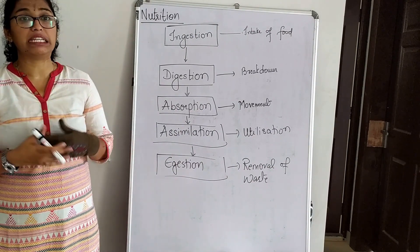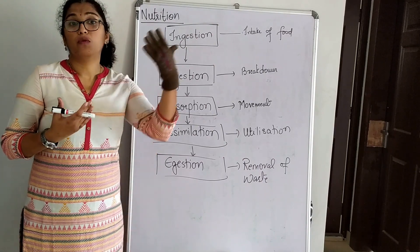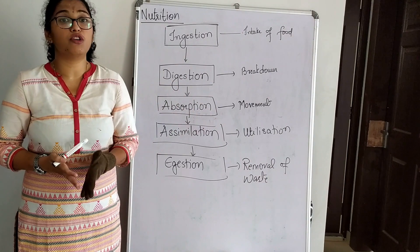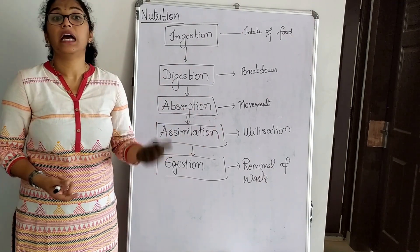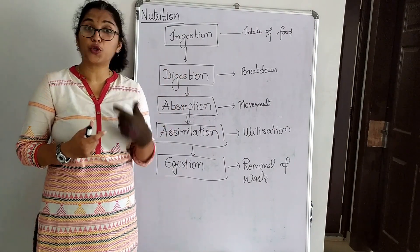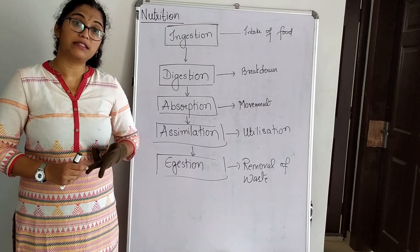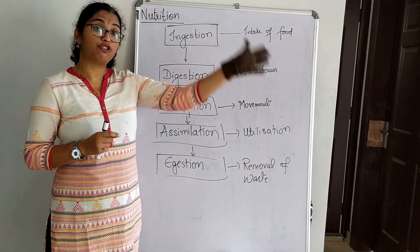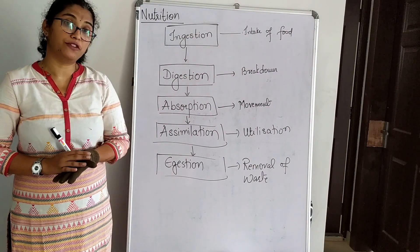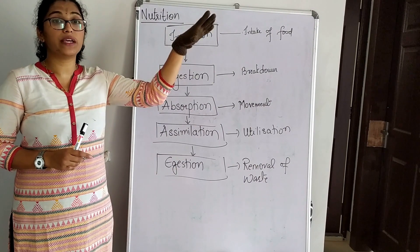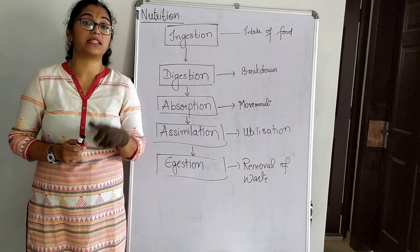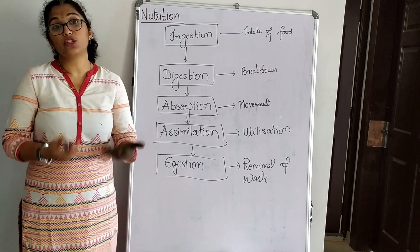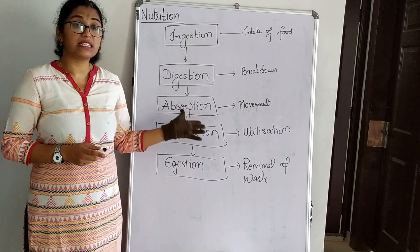So in today's class, we studied the introduction to life processes, what nutrition is, what nutrients are, and modes of nutrition. Under autotrophic nutrition we studied photosynthesis — raw materials, site, and events — as well as stomata. Under heterotrophic nutrition we covered three types with examples. Under holozoic nutrition, we studied nutrition in the unicellular organism amoeba. In the next class, we will study nutrition in human beings.